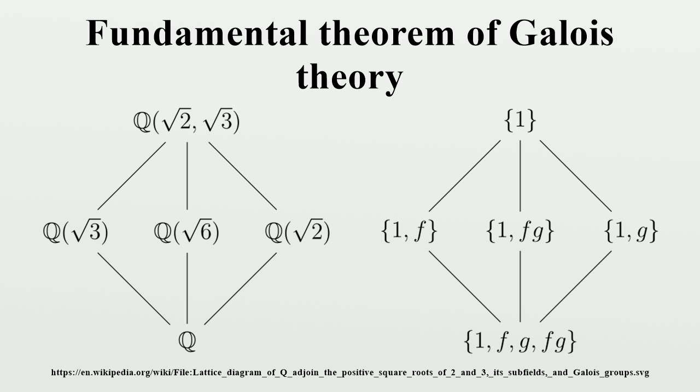It has five subgroups, each of which correspond via the theorem to a subfield of K. The trivial subgroup corresponds to all of K. The entire group G corresponds to the base field Q. The two-element subgroup {1,f} corresponds to the subfield Q(√3), since f fixes √3. The two-element subgroup {1,g} corresponds to the subfield Q(√2), since g fixes √2. The two-element subgroup {1,fg} corresponds to the subfield Q(√6), since fg fixes √6.